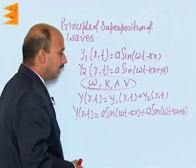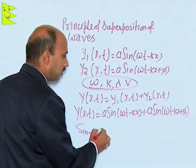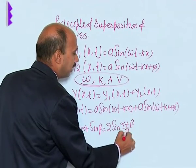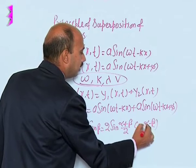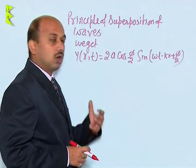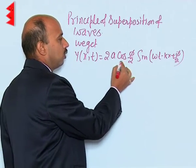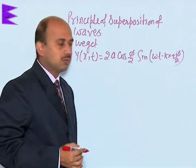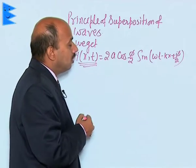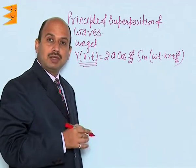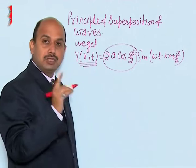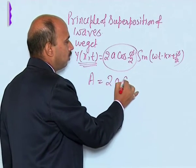Now we have to solve this using the formula: sin α + sin β = 2 sin((α + β)/2) cos((α − β)/2). By using this formula we can solve this equation. On solving, we get y(x,t) = 2a cos(φ/2) sin(ωt − kx + φ/2). This resultant wave is also a sinusoidal wave, and it has a phase angle φ/2 with respect to either wave y1 or y2. The amplitude of the resultant wave is given by A = 2a cos(φ/2).